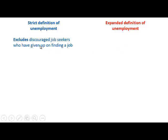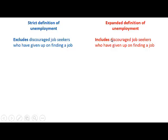We have two definitions of unemployment: a strict definition and an expanded definition. The strict definition excludes the discouraged job seekers who had given up on finding a job, while the expanded definition includes the discouraged job seekers who are no longer trying to find a job.